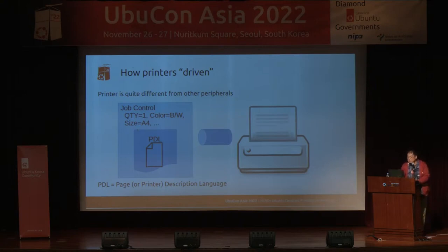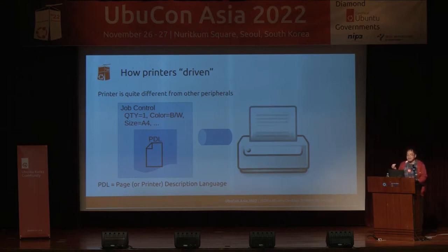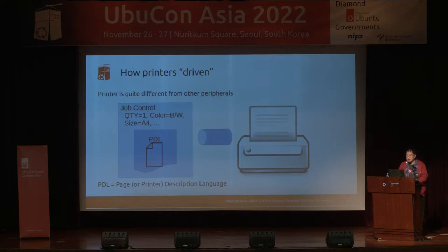The printer communicates via network, USB, or traditionally IEEE 1284 (Centronics). The print queue handling is already built into the Linux kernel. This kind of work is entirely in user space — that is the key difference between a printer and other peripherals.